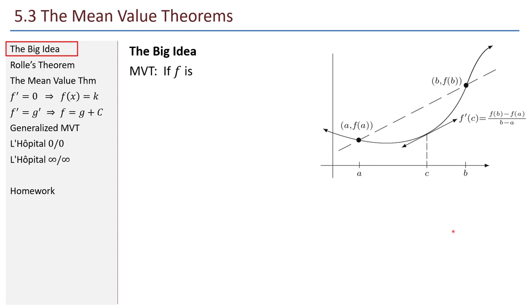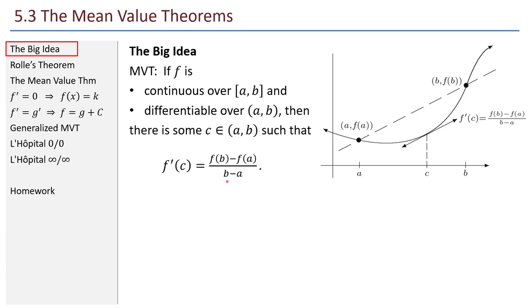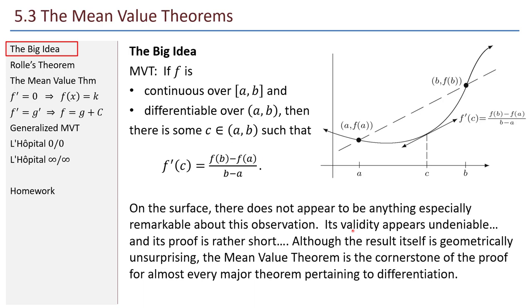Here's the big idea. If a function f is continuous over a closed interval and differentiable over its interior — we will see this hypothesis a lot — then there is some c in the interior such that f'(c) equals f(b) minus f(a) over b minus a. So the derivative at c, the slope of that tangent line, is the same as the slope of the line connecting the two endpoints. As our author says, although the result itself is geometrically unsurprising, the mean value theorem is the cornerstone of the proof for almost every major theorem pertaining to differentiation.